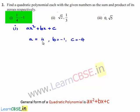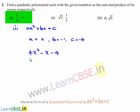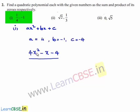Now, substituting the values of a, b, and c in the polynomial ax² + bx + c, we get the polynomial as 4x² - x - 4. Hence, the required polynomial is 4x² - x - 4.